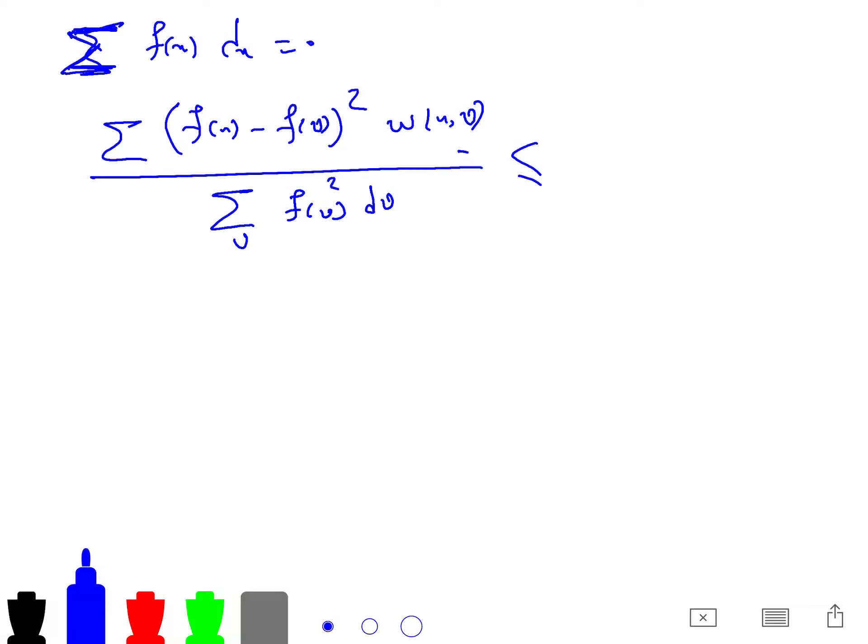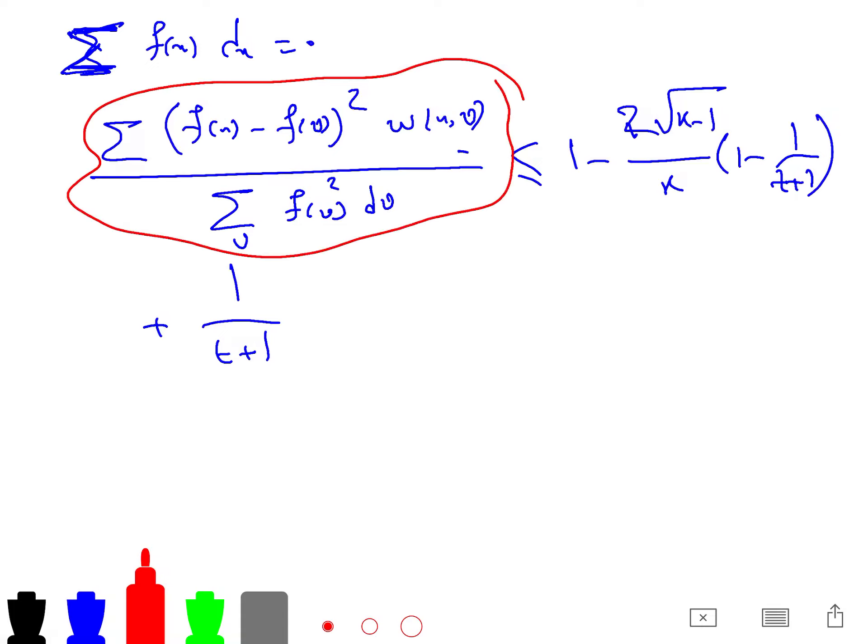If you just plug in that f, that interesting f, you will see it is upper bounded by 1 - 2(k-1)/k * (1 - 1/(t+1)) + 1/(t+1). And since the ratio is maximized, so try to maximize it after you plug in.